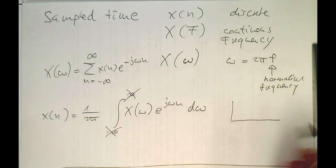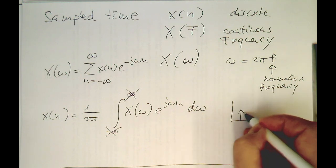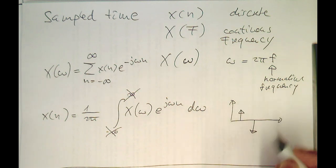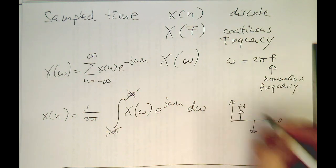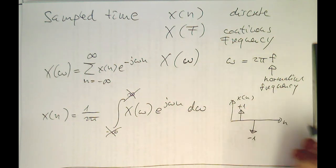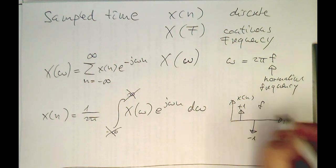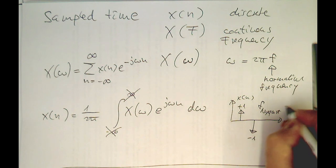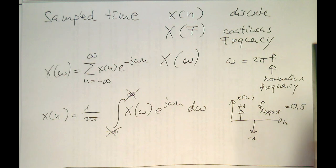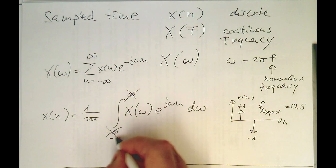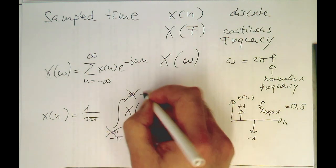So remember again this handy plot. We have got the plus 1 here, minus 1 here of our x of n and n, and this corresponds to our f Nyquist. In normalized terms, this is 0.5. So remember here we are in the omega domain, and therefore our integral runs from minus pi to plus pi.